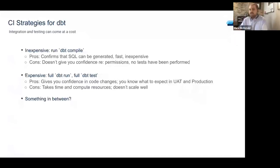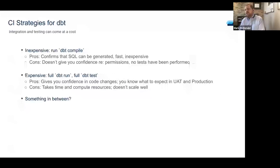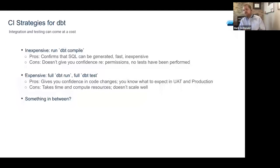At the other end of the spectrum, you could do a full DBT run and a full DBT test prior to promoting your code. As you can imagine, this is really expensive — it takes time and compute resources. Depending on the size of your team, if you do this every time someone wants to propose a code change, it's clearly not going to scale very well. But the benefit is you can be very confident that what you put in UAT and production is going to work. The question is, is there some happy medium between these two ends? The spoiler alert is yes, there is.